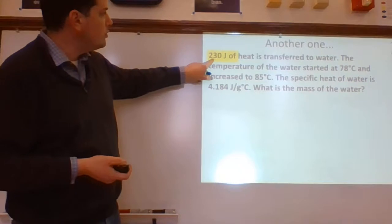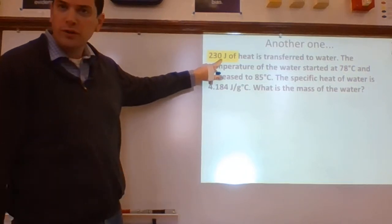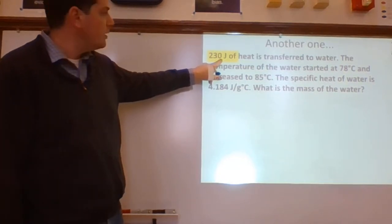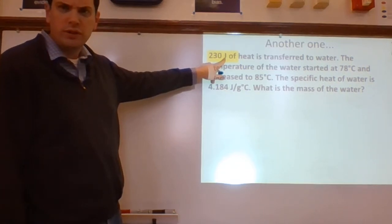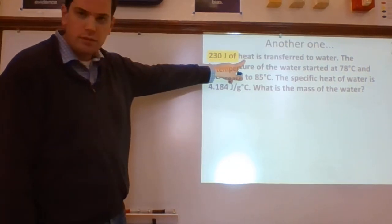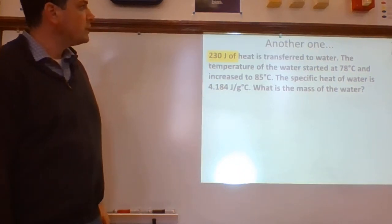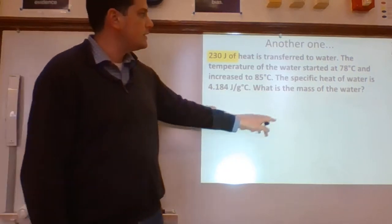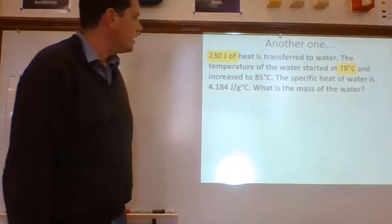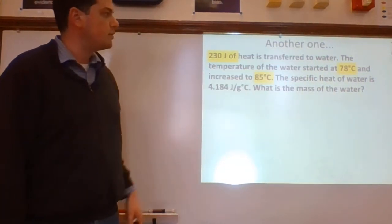So I'm looking for numbers 230. I'm also looking for units. J. J stands for joules. What's joules? Heat. Joules is heat. It's transferred to water. The temperature of the water started out at 78 degrees Celsius and increased to 85 degrees Celsius.